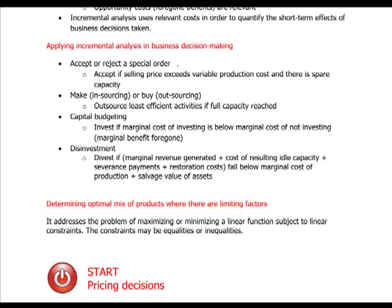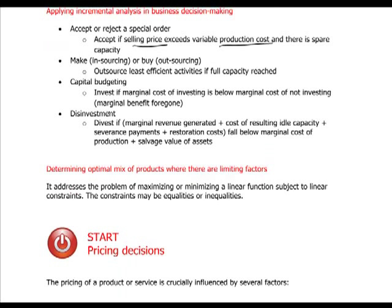Applying incremental analysis in business decision-making can involve accepting or rejecting a special order — something outside normal business. If we want to accept a special order, the selling price must exceed the variable production costs. Make-or-buy decisions involve outsourcing less efficient activities when full capacity is reached, or insourcing if it brings more benefits. For disinvestment, divest if all costs and revenues generated by the asset fall below the marginal cost of production plus the salvage value of the assets.